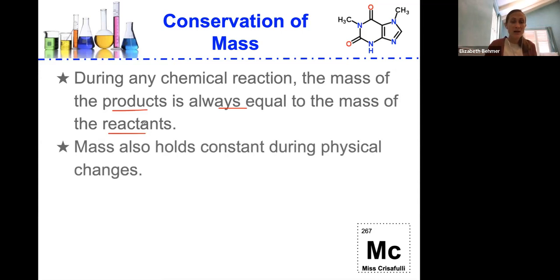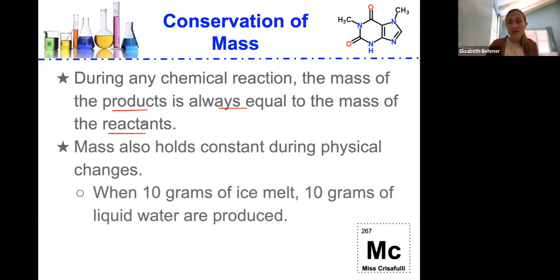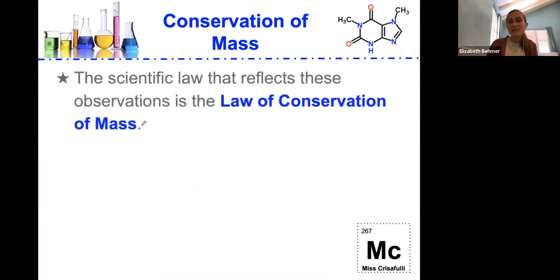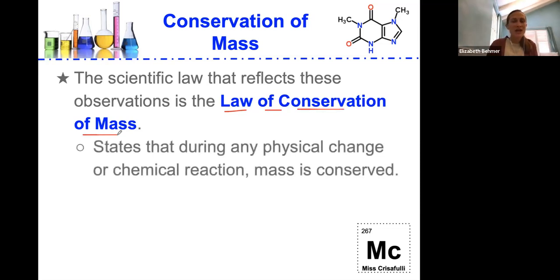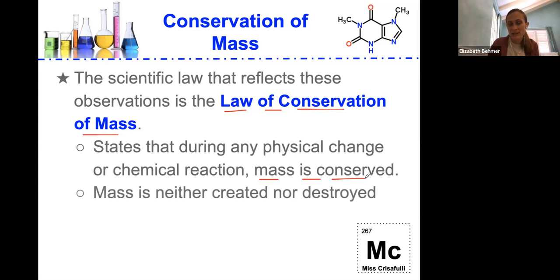Mass also holds constant during physical changes. So for example, when you melt 10 grams of ice during a physical change, 10 grams of liquid will be produced. The scientific law that reflects these observations is called the law of the conservation of mass. It states that during any physical change or chemical reaction, mass will be conserved. It's not just disappearing. Whatever you start with at the beginning, you're going to always end with the same amount of stuff of mass, even if it's changed substance. Mass is neither created nor destroyed.